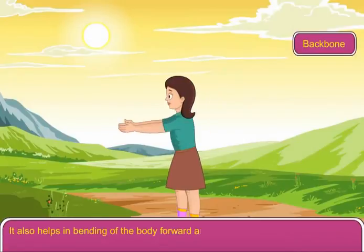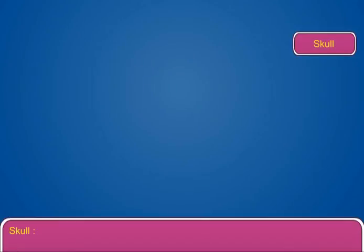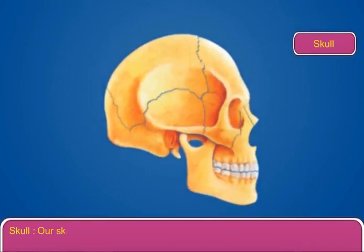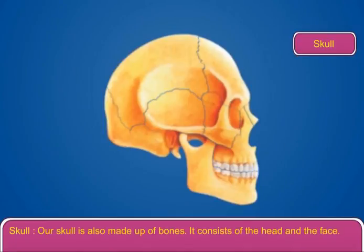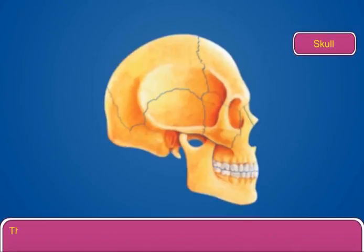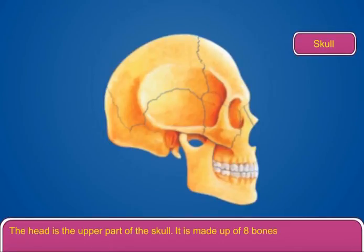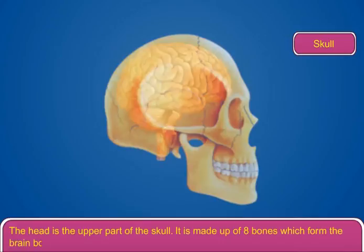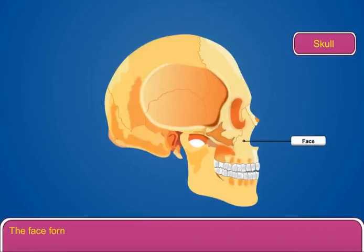Our skull is also made up of bones and consists of the head and the face. The head is the upper part of the skull and is made up of eight bones which form the brain box that protects the brain. The face forms the lower part of the skull.